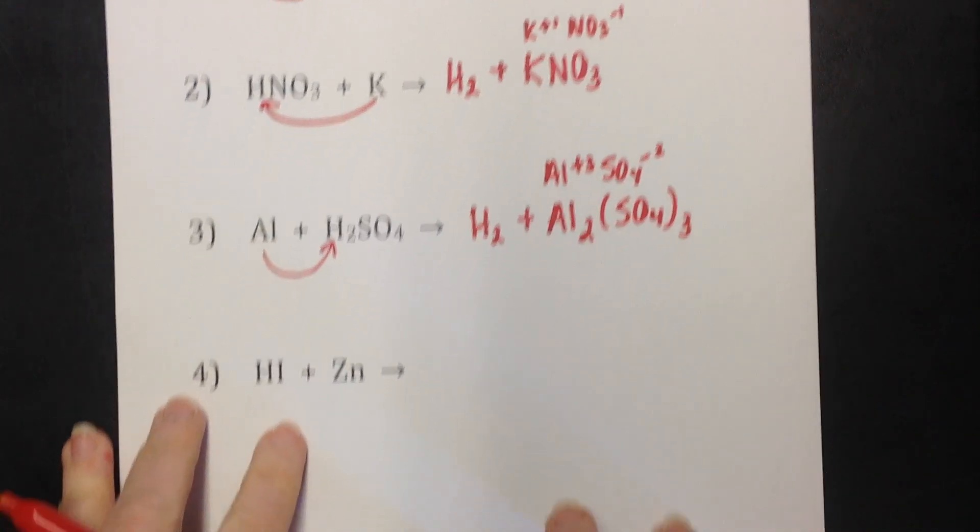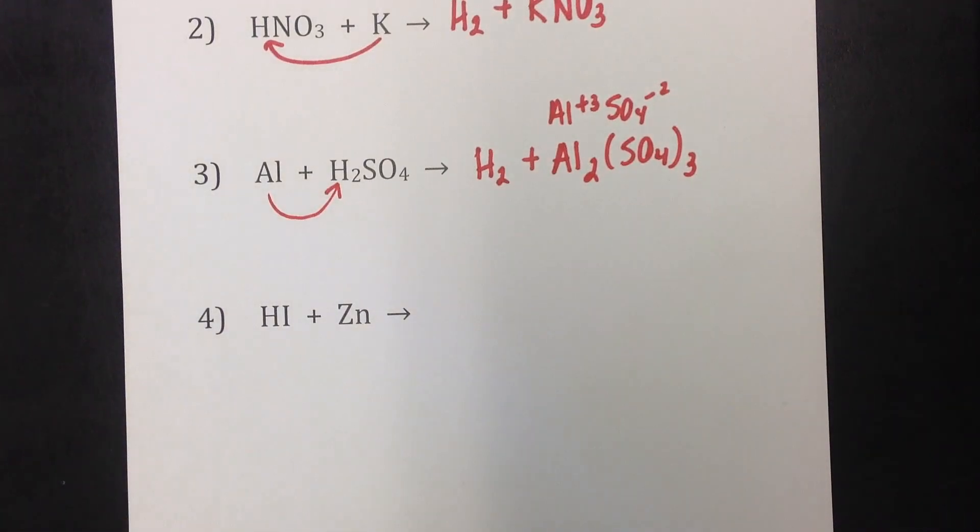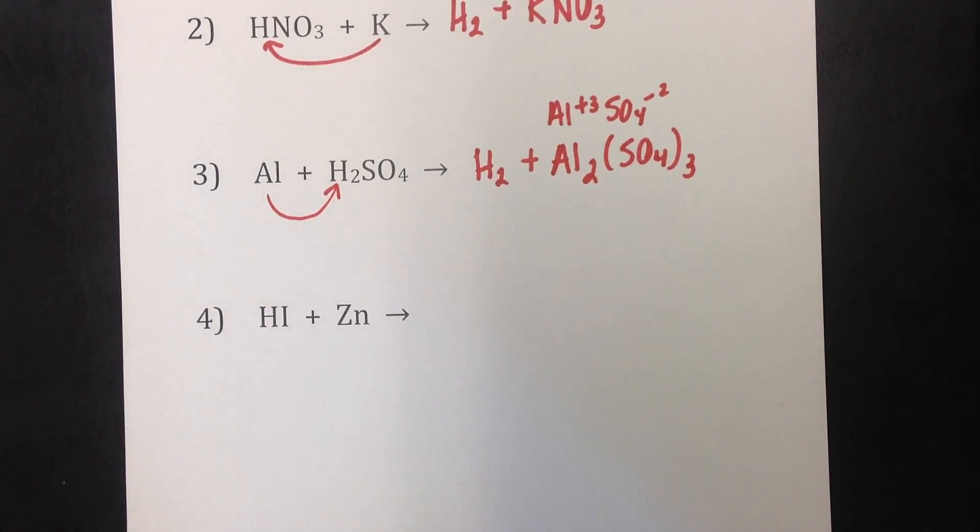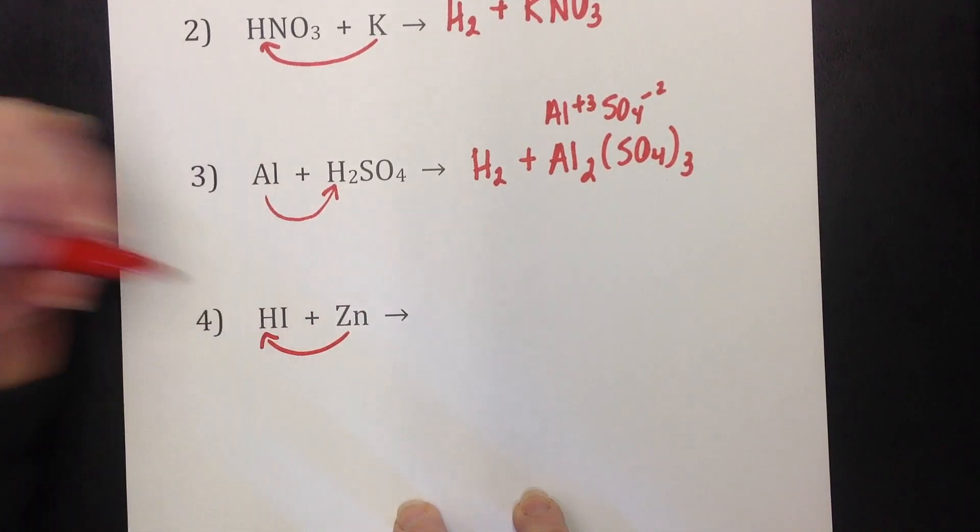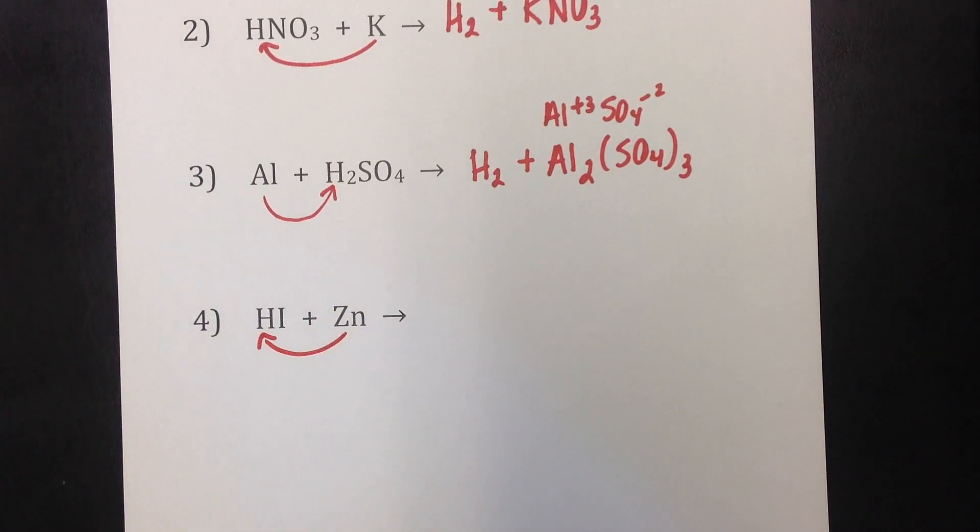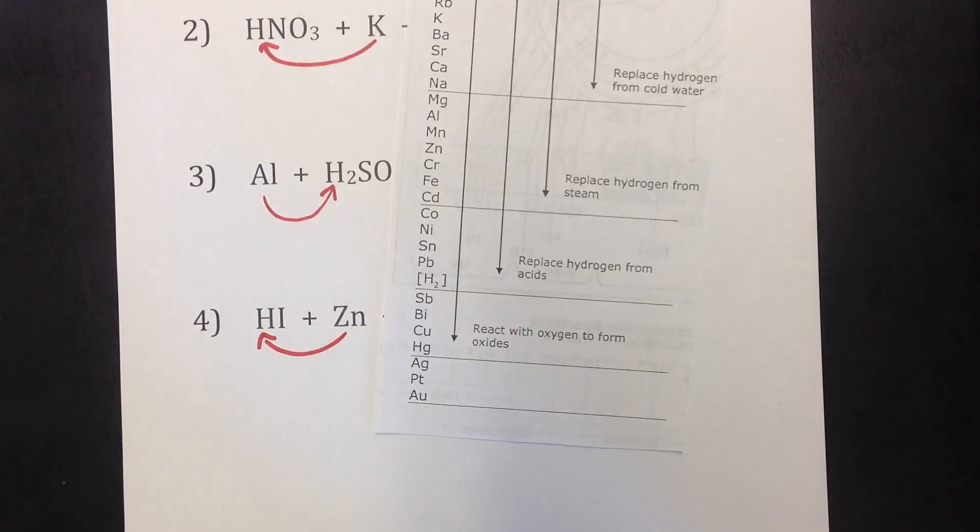And one more. We have hydroiodic acid. That's a mouthful for that little bitty formula. But remember, for binary acids, you say hydro whatever ick. And this happens to be iodine. So hydroiodic acid. Hydroiodic acid and zinc metal. So we got to see if zinc can kick that hydrogen out of the acid. So does zinc fall in that category?